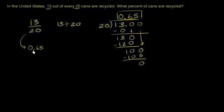Or another way you could say is you shift the decimal over two spots to the right. So this is going to be equal to 65%.